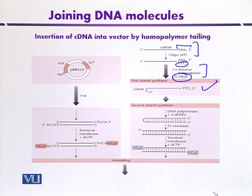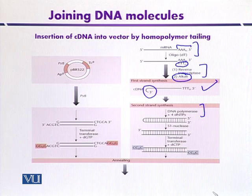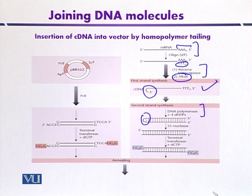Naturally, the reverse transcriptase introduces a hairpin-like structure at the 3' end that can be used as a template to synthesize the second strand of the DNA. This is mediated by DNA polymerase in the presence of all four types of dNTPs. At the other end of the DNA, this hairpin-loop-like structure is present, and it can be hydrolyzed by the use of some nucleases so that one can get double-stranded cDNA.